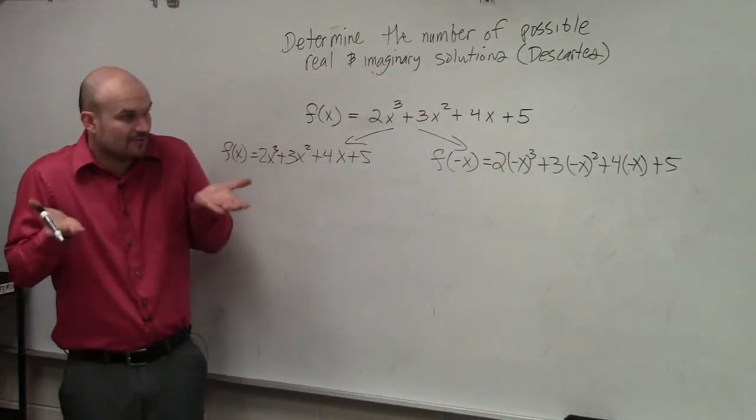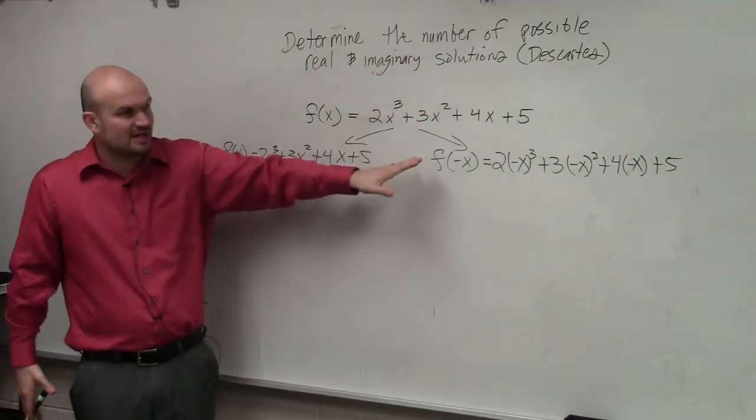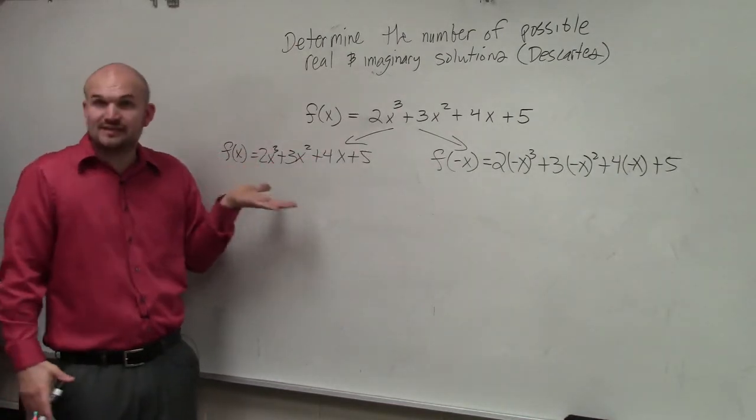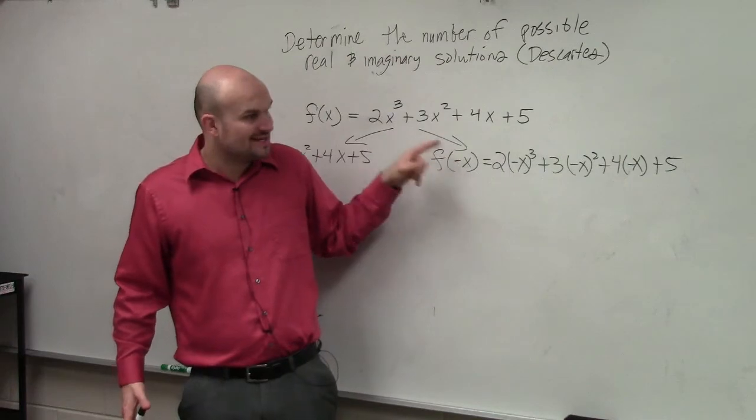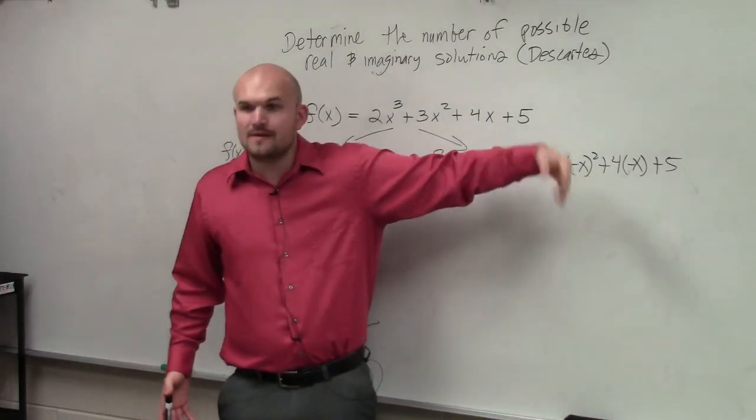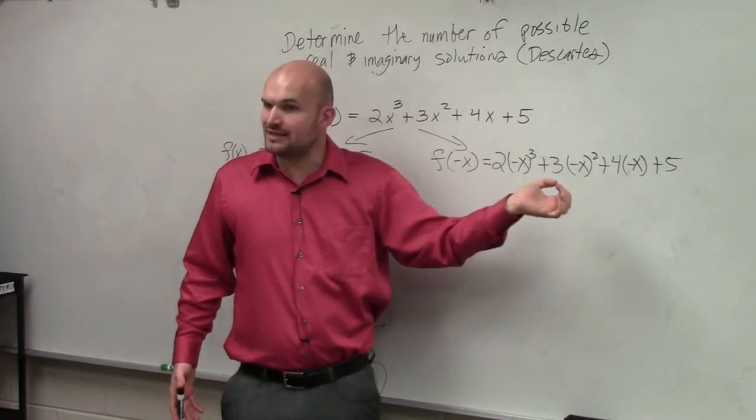Okay. Now this is, again, where most students make their mistakes is the negative form. The positive is you just leave it right as is. But with the negative, you're now going to insert negative x in for x. Then we have to simplify this now.